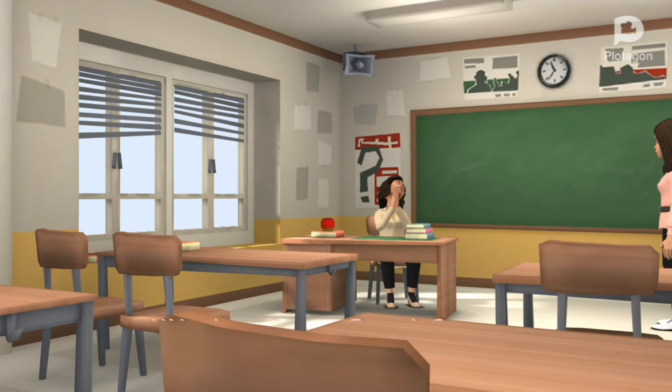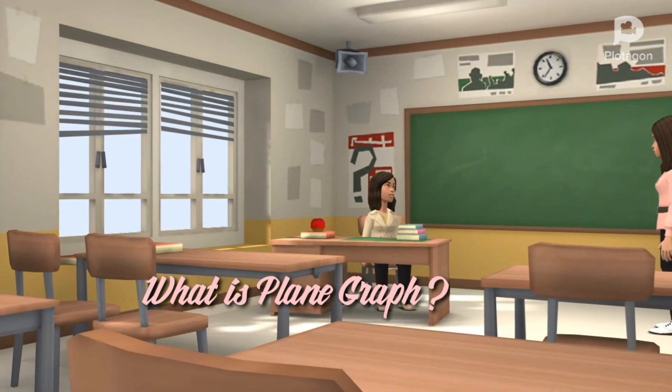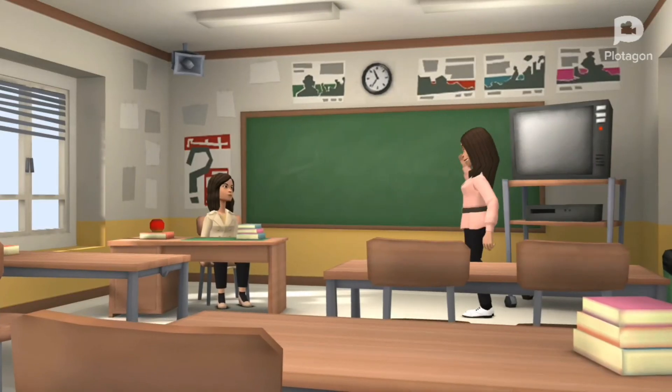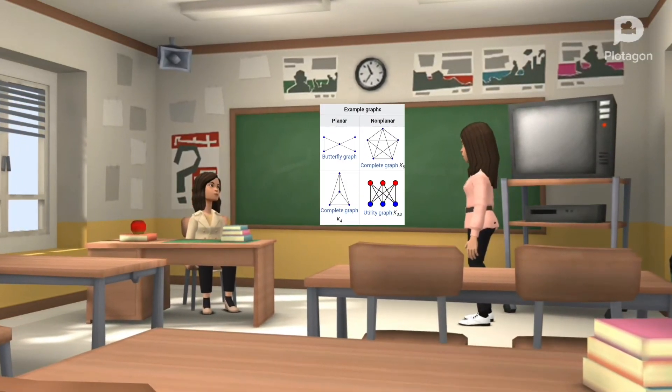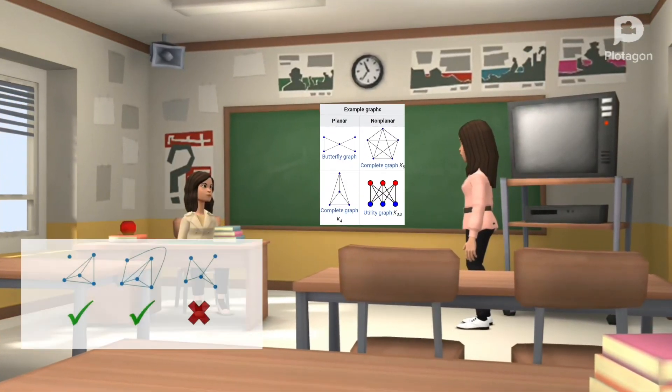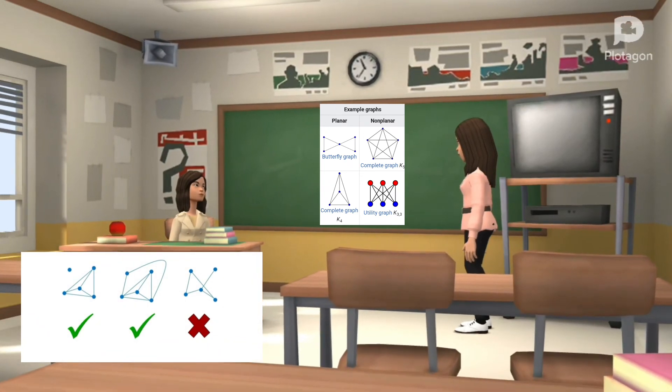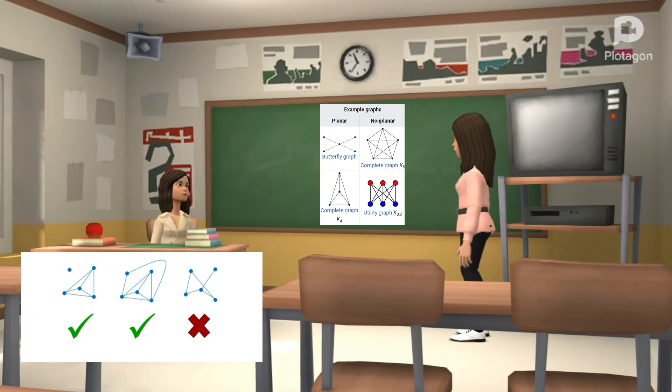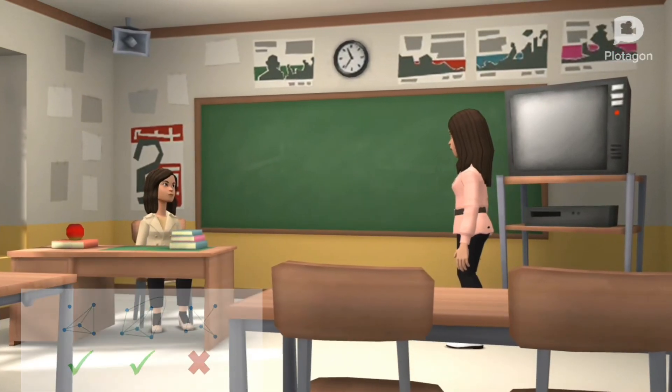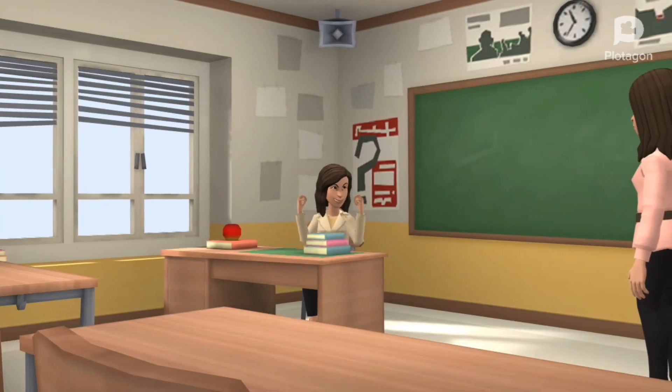Good. The last question. What is plane graph? A plane graph can be defined as a planar graph with a mapping from every node to a point on a plane, and from every edge to a plane curve on that plane, such that the extreme points of each curve are the points mapped from its end nodes, and all curves are disjoint except on their extreme points.